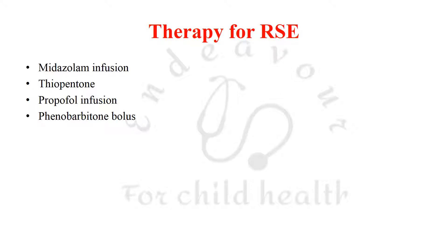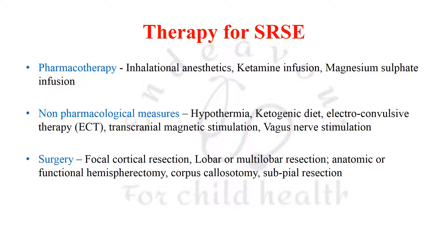Therapy for super-refractory status epilepticus includes pharmacological options — inhalational anesthetics, ketamine infusion, magnesium sulfate infusion — and non-pharmacological measures such as hypothermia, ketogenic diet, electroconvulsive therapy, transcranial magnetic stimulation, and vagus nerve stimulation. Surgical options include focal cortical resection, lobar or multilobar resection, anatomic or functional hemispherectomy, corpus callosotomy, and subpial transection.